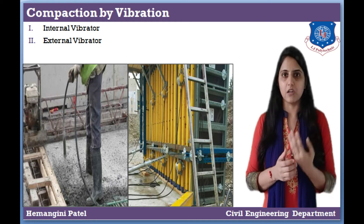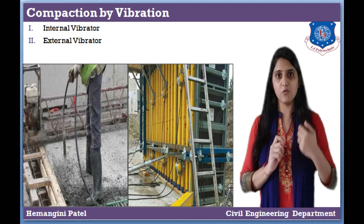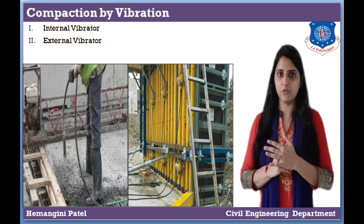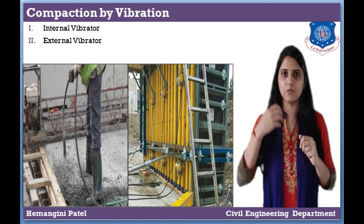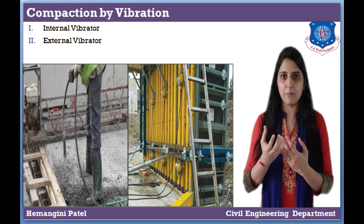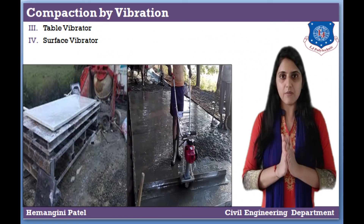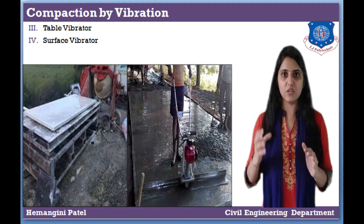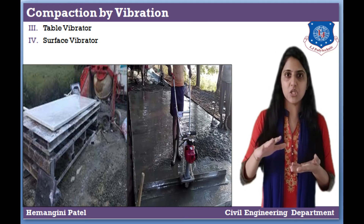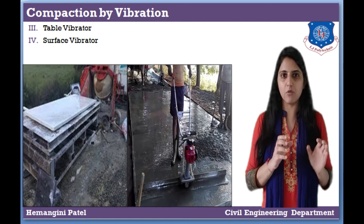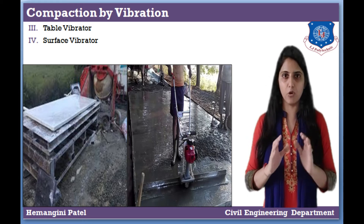The next method is external vibrators, and one type is table vibrators. In table vibrators, we use steel tables with an electric motor which creates vibrations. Generally, this type of method is used in small places, such as laboratories and for making concrete cubes.